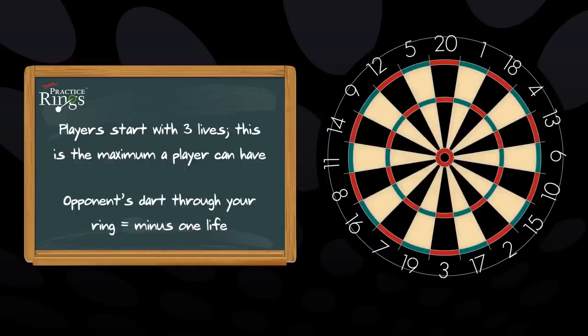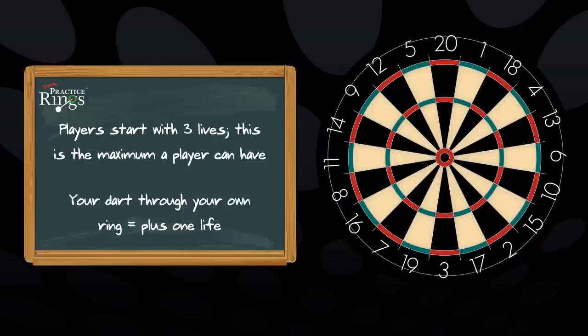Each time a player throws a dart through an opponent's ring, the player will lose a life. Each time a player throws a dart through their own ring, they will gain a life.